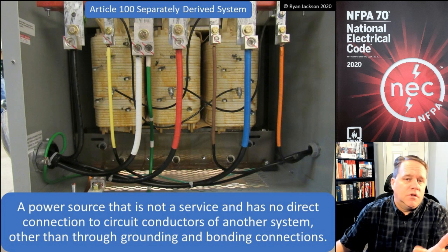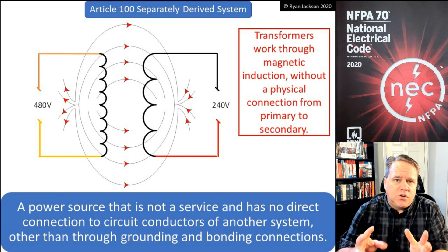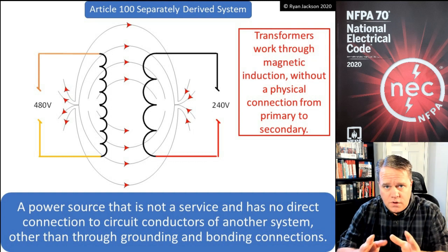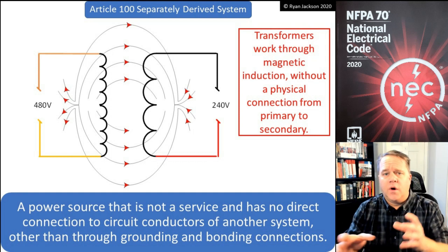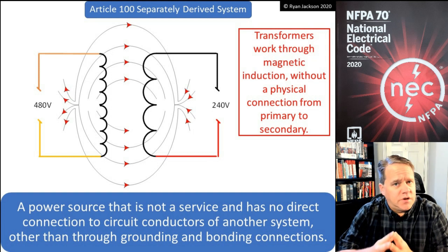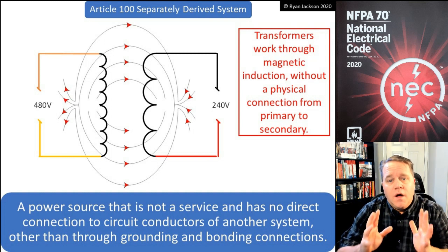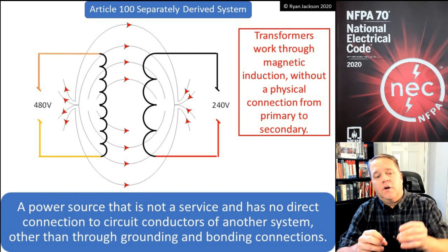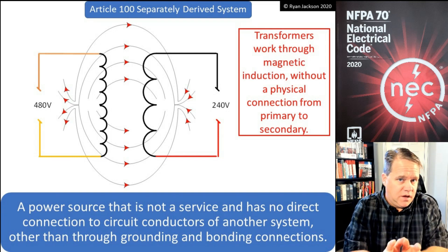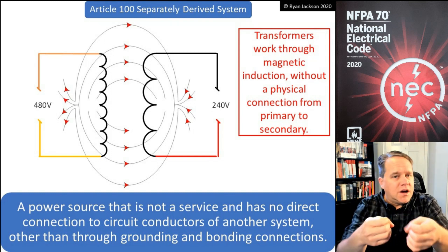Looking at a photograph of a transformer — that is certainly the most common type of separately derived system. It qualifies because there is no connection between the primary and the secondary; it all works through magnetic induction. A coil of wire is energized, another coil placed near it has a current induced onto it. There's a link below to a video on how transformers work — watch that and a separately derived system will make perfect sense.